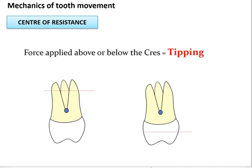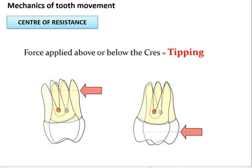When force is applied above or below the center of resistance, tipping occurs. If force is applied at the crown area, the crown tips in the same direction with minimum root movement in the opposite direction. If force is applied at the root area, the root moves in the opposite direction with minimum or no movement of the crown. This is known as tipping.